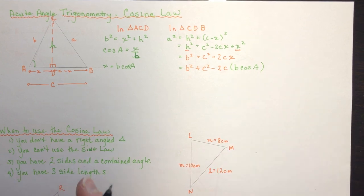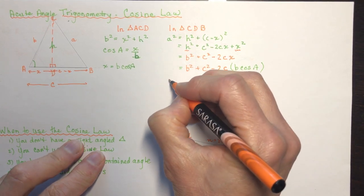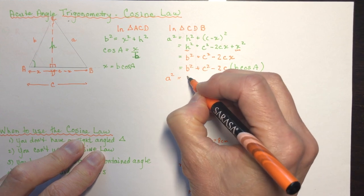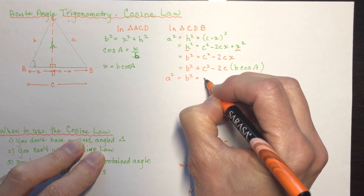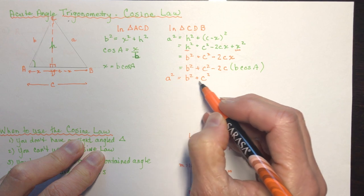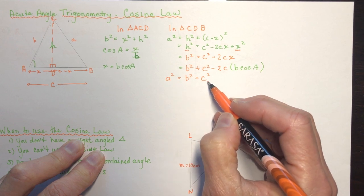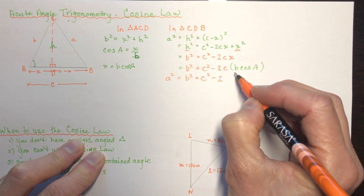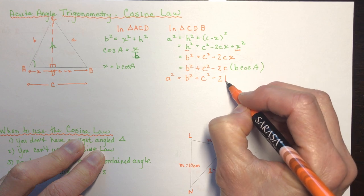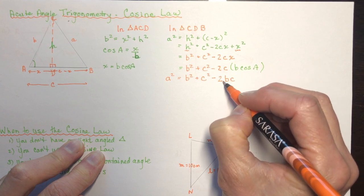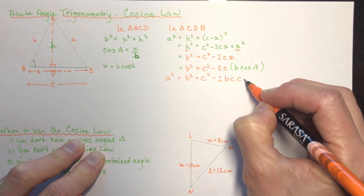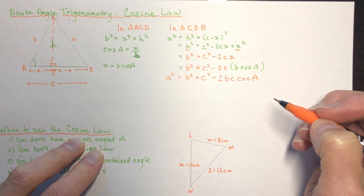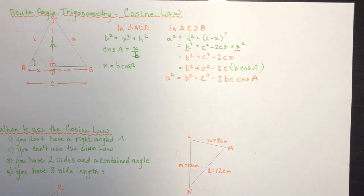We can clean up this formula to get: a squared equals b squared plus c squared minus 2bc times cosine of A. That's the cosine law. It resembles the Pythagorean Theorem but with that extra correction term.